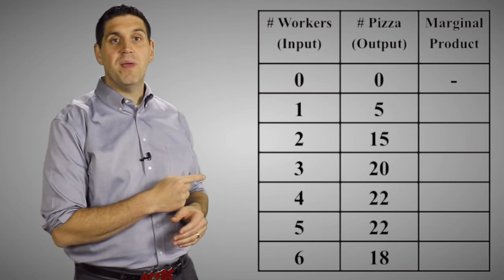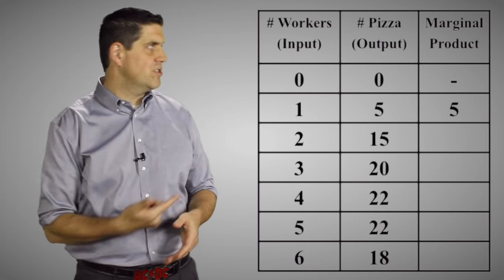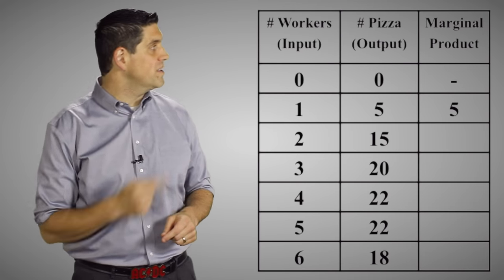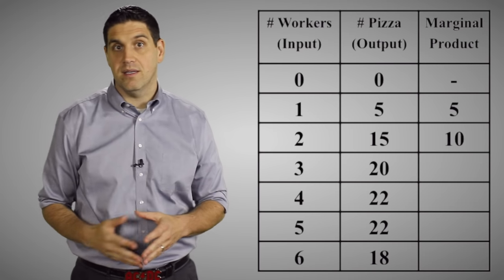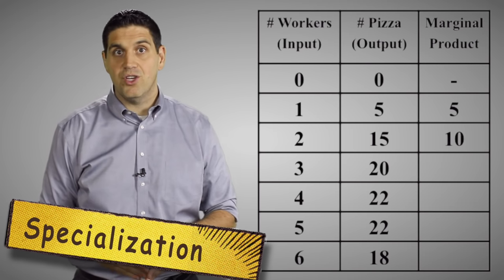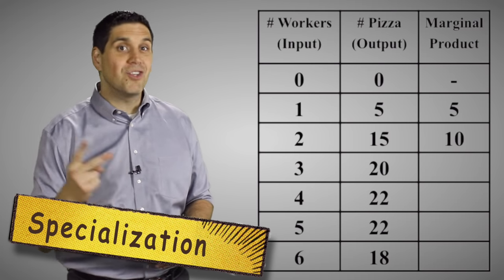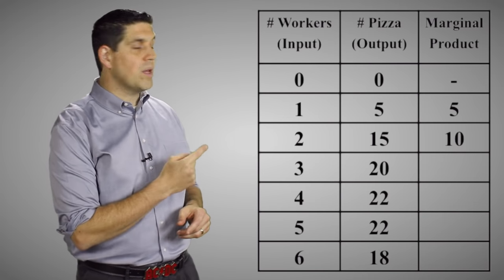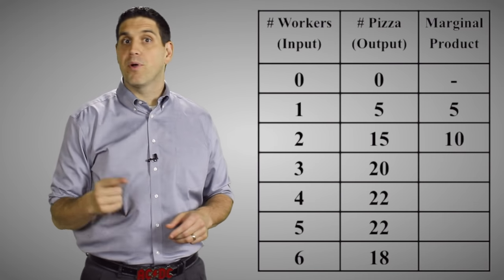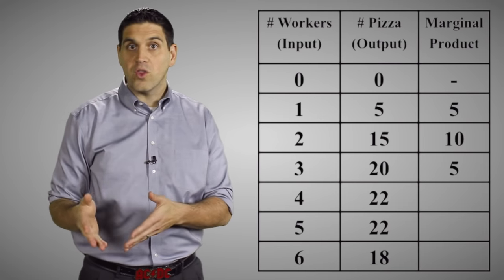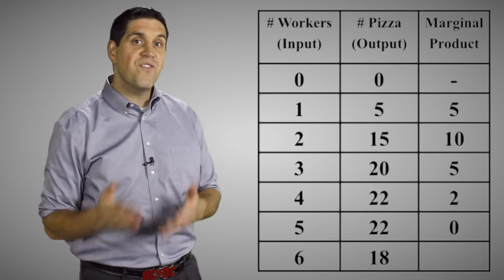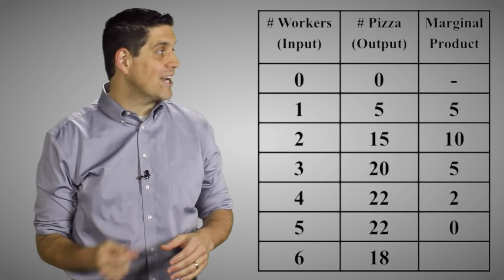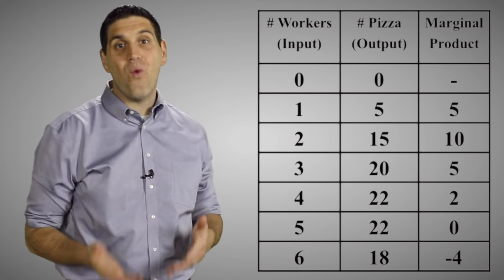The first worker can produce five pizzas, so the additional output they make is just those five pizzas. But when you hire two workers, they can produce 15. So the additional output from the second worker is an additional 10 pizzas. This shows the benefits of specialization. One worker can produce five pizzas on their own, but two workers can more than double that output. Three workers can produce a total of 20 pizzas, but the additional output produced by that third worker is five pizzas. The fourth worker adds an additional two pizzas, and the fifth worker adds an additional zero. But now at the sixth worker, the total output actually falls, so the marginal product is negative four.